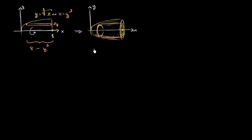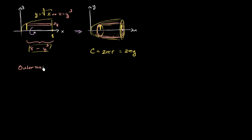The circumference of the cylinder is equal to 2π times the radius. The radius is just going to be your y value — that distance is simply y. So the circumference equals 2πy. The outer surface area is then the circumference times the width of the cylinder: 2πy times (8 minus y³).